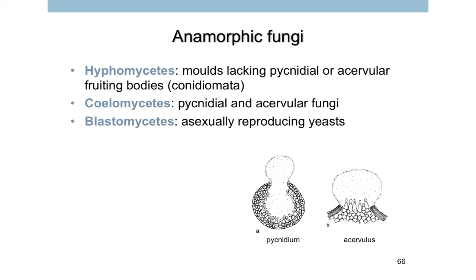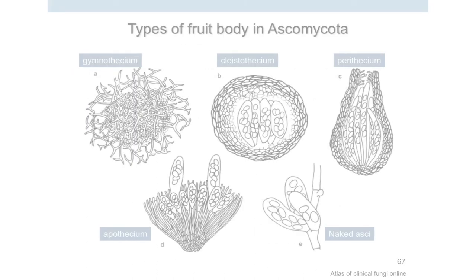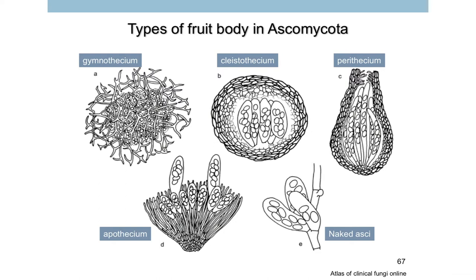The second class is coelomycetes, where asexual spores are enclosed in a sac-like structure called a pycnidium. The third class includes some yeast cells classified as blastomycetes. This is a nice illustration of the beautiful fruiting bodies of sexual structures of the Ascomycota — they have different names: gymnothecia, cleistothecia, perithecia — and from the culture plate we can sometimes see the cleistothecia and perithecia.